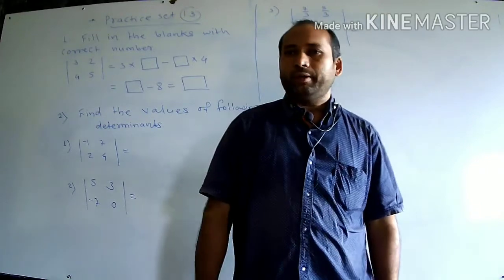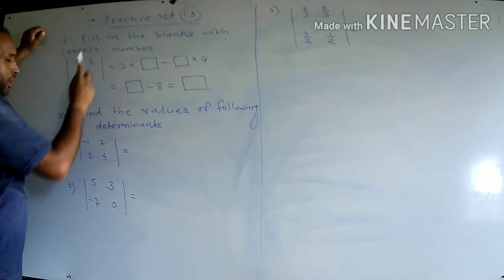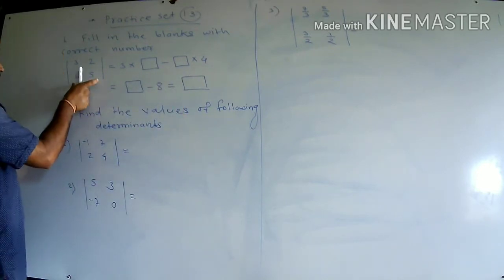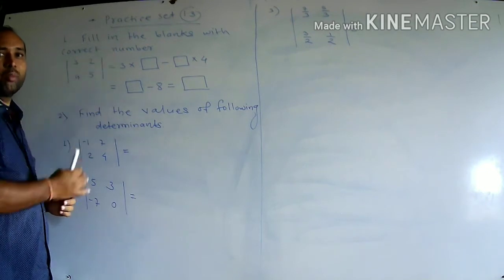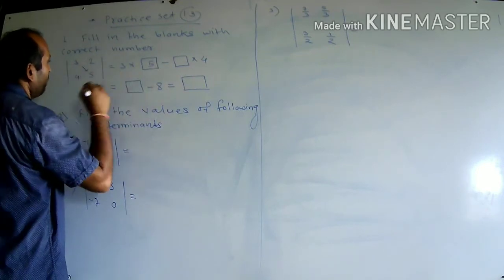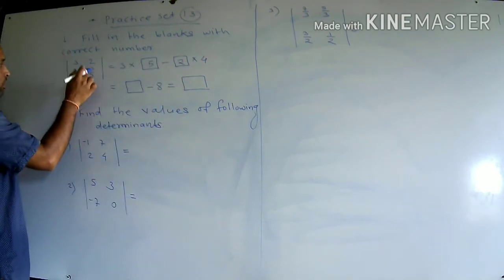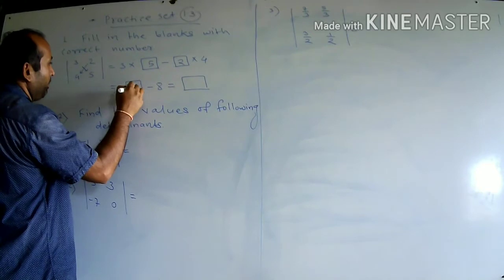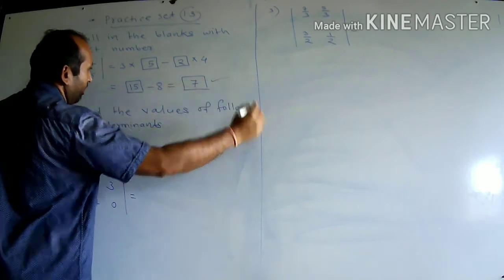See Practice Set 1.3, Question 1: fill in the blanks with correct numbers. We need to find the value of the determinant by applying the rule — product of diagonal elements minus product of non-diagonal elements. 3 into 5 minus 2 into 4: that is 15 minus 8, so the value of the determinant is 7.